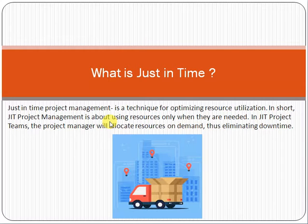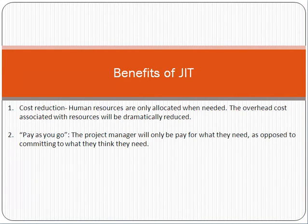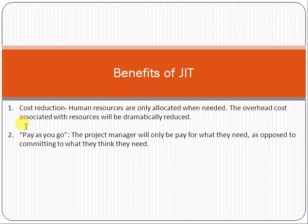Now let's look at the benefits of JIT in relation to quality management. First, it will reduce your cost. If you properly understand JIT, cost reduction is an automatic result. You are utilizing resources only when they are needed. In a food chain, for example, costs include electricity, machine costs, machine repair, and human resources — all of which are only engaged when there is an order.